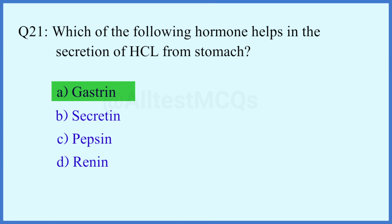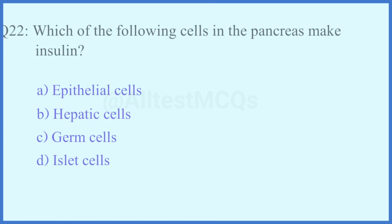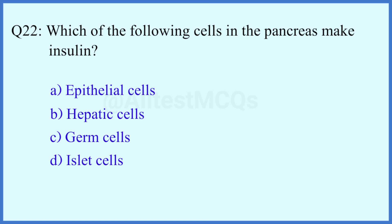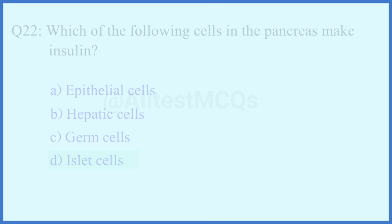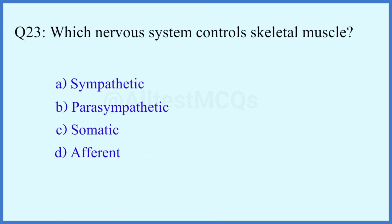Question number 22. Which of the following cells in the pancreas make insulin? The right answer is option D: Islet cells.